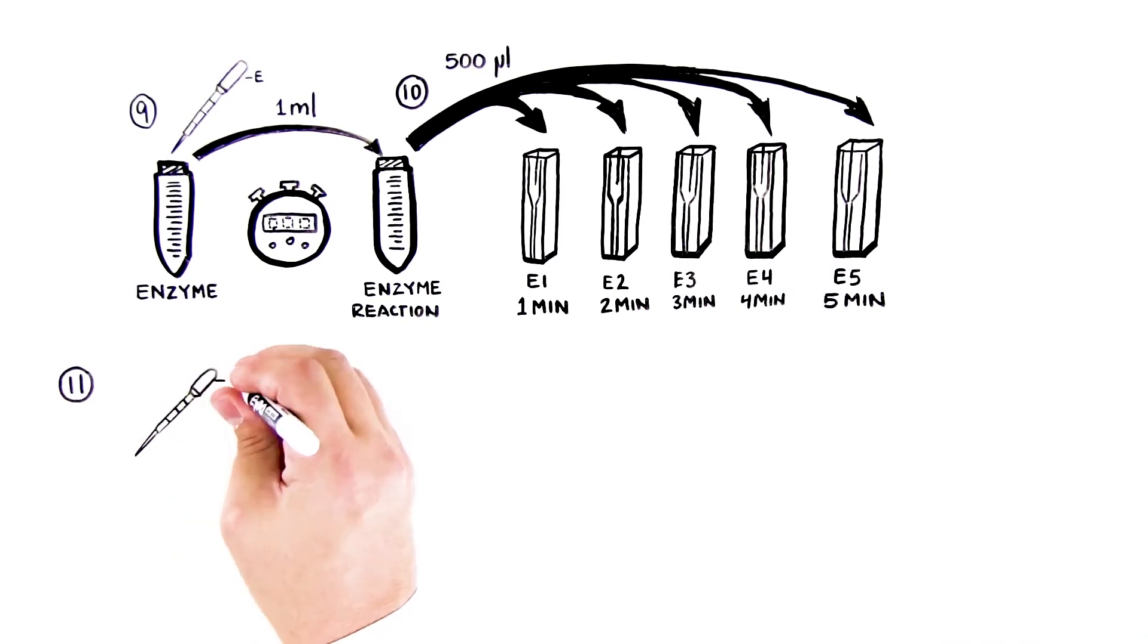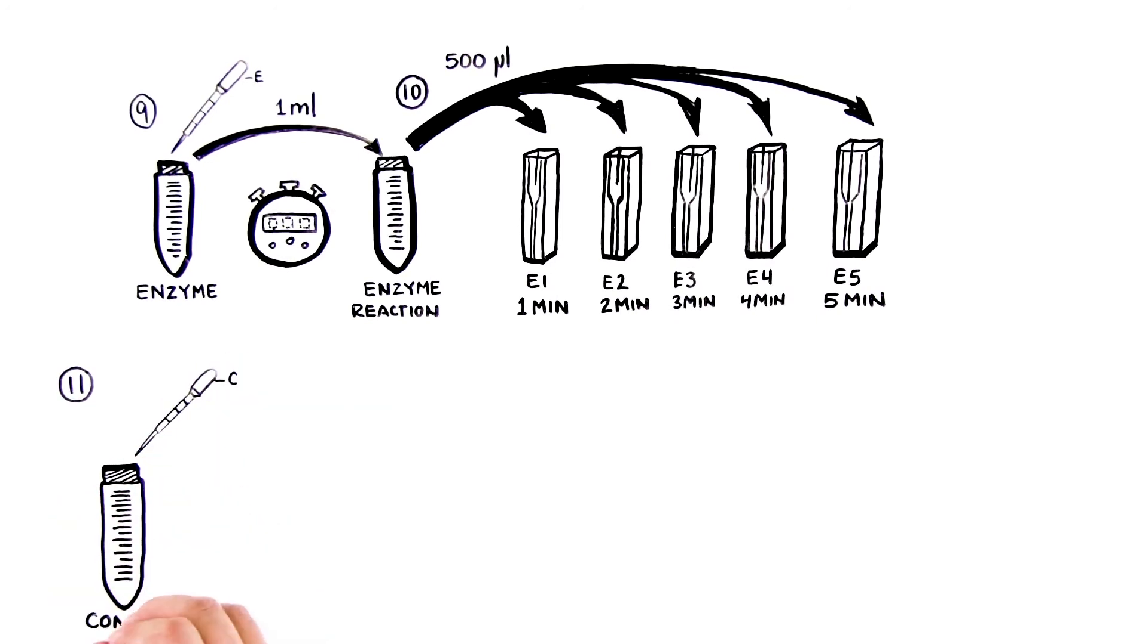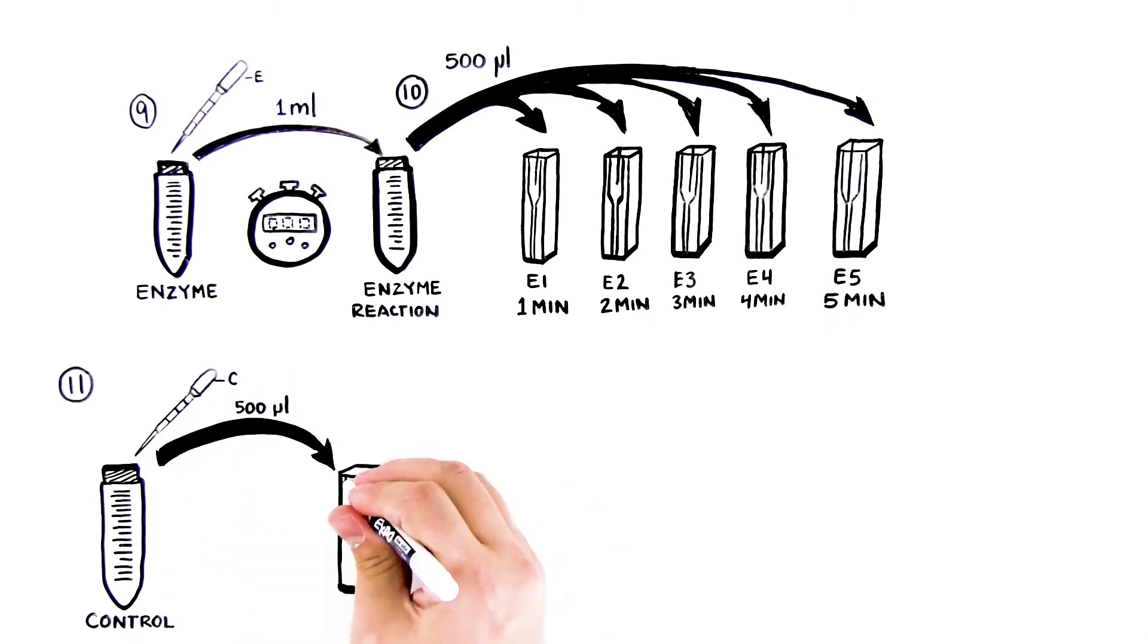Step 11: After all the enzyme samples have been collected, use the DPTP labeled C to remove 500 microliters of the solution from the control reaction tube and add it to the cuvette labeled end.